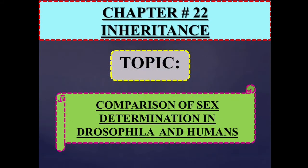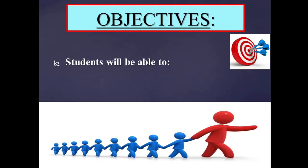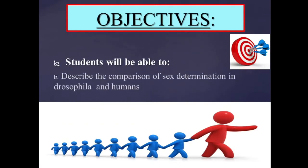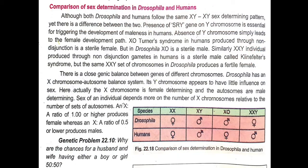Dear students, our Chapter No. 22, Inheritance, is continued. The topic we are going to study today is the Comparison of Sex Determination in Drosophila and Humans, taken from class 2nd year. The objective of today's lecture is: at the end of the lecture, you will be able to describe the comparison of sex determination in Drosophila and Humans.